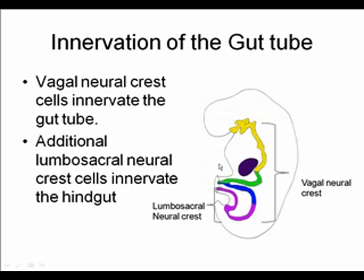The gut tube has important neural innervation. The myenteric and submucosal plexi form along the gut tube to regulate smooth muscle. Vagal neural crest cells — developing in the region of the medulla — migrate down and populate different regions to form ganglia. In addition, a small population of lumbosacral neural crest cells innervates the hindgut by migrating upward. These are the two populations of neural crest cells that form the ganglia along the gut tube.